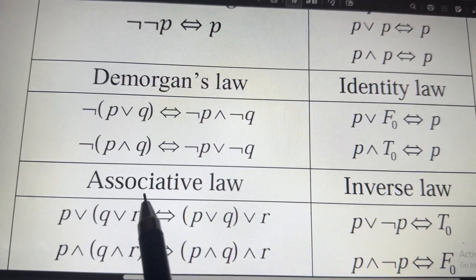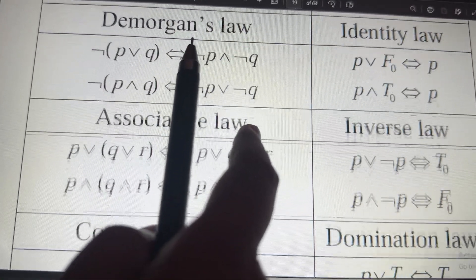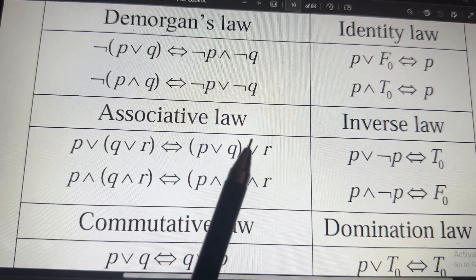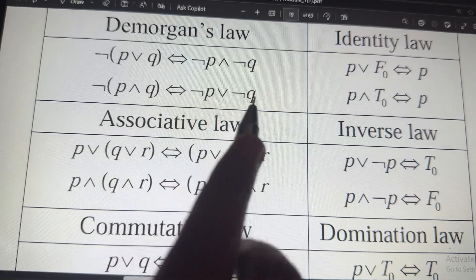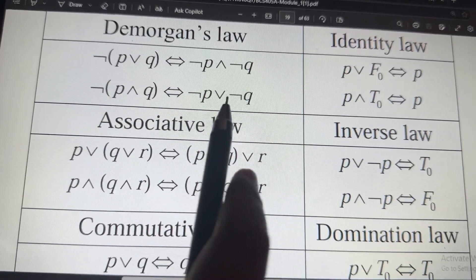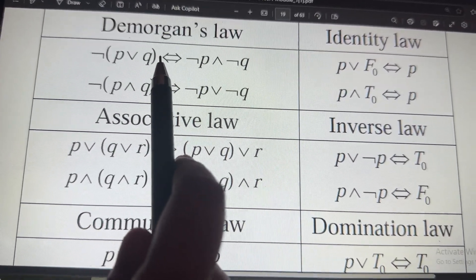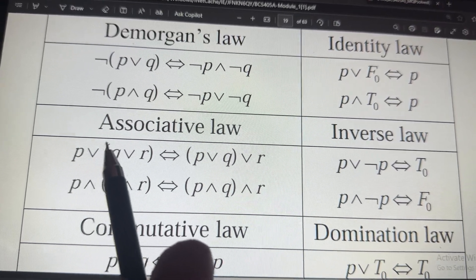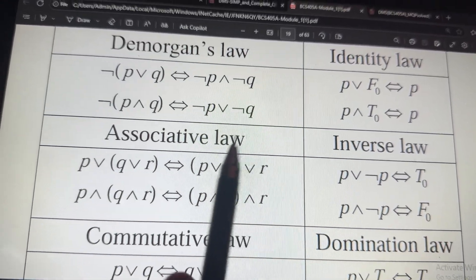Similarly, let us move to associative law. Associative law means, if you find two same symbols, then it is associative law. Here, you have three letters. Here at all, we had how many letters? Only two, right? P, Q. From associative law, you will have three letters. P, Q and R.